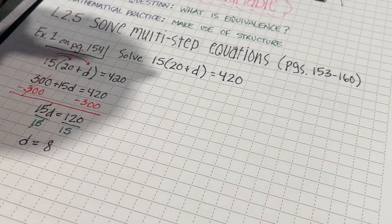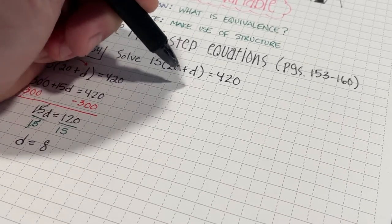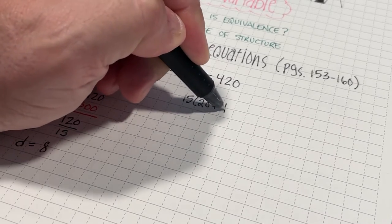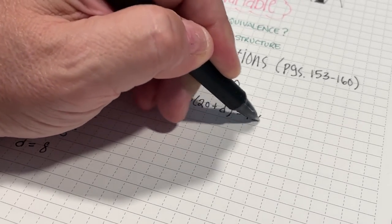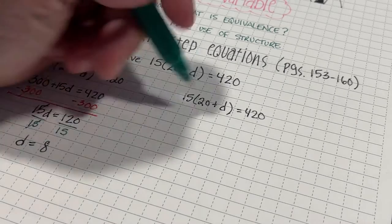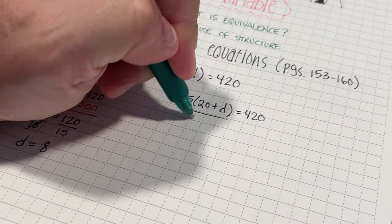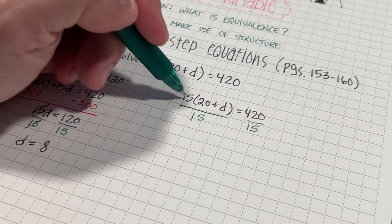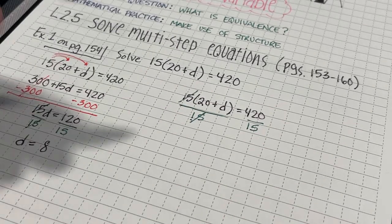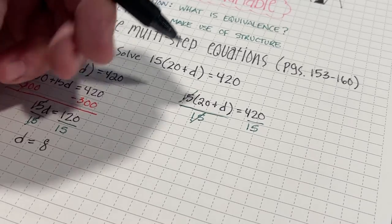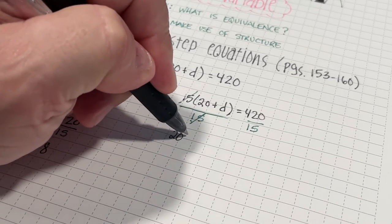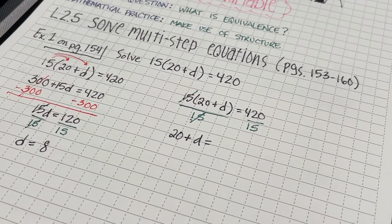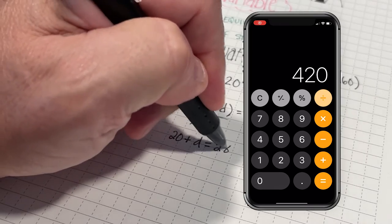Another way that I can solve this problem is that I don't necessarily have to distribute the 15. What I'm going to do is divide both sides of the equation by 15 to begin the problem. If I divide by 15, this 15 divided by 15 is just going to be 1, so I'll have 20 plus D, and then 420 divided by 15 is equal to 28.